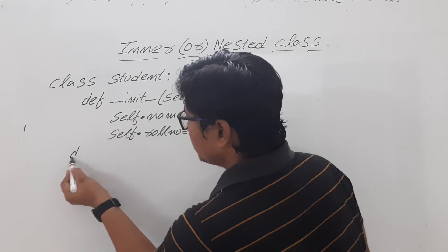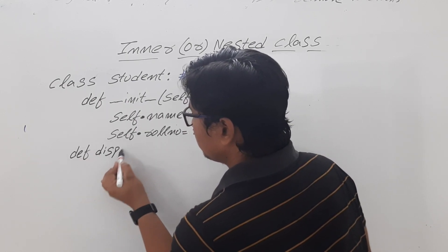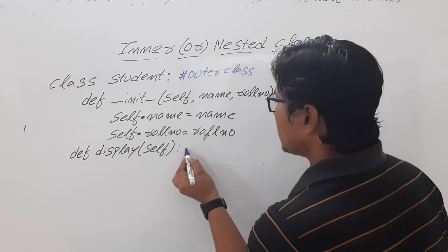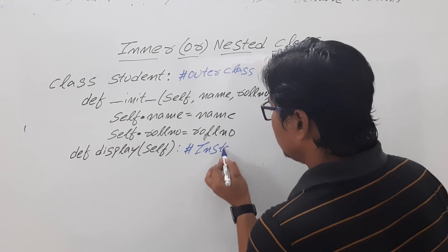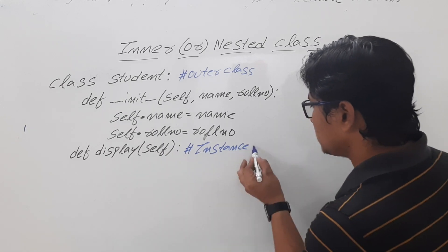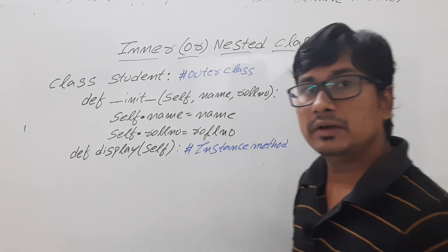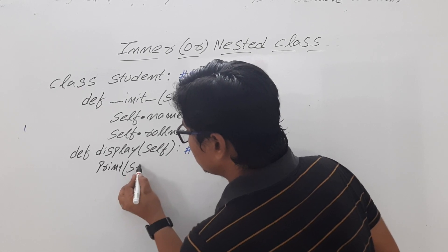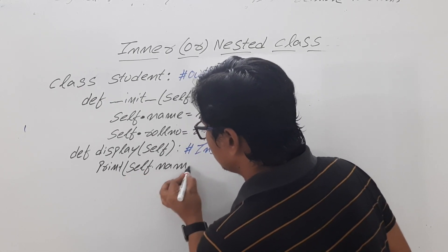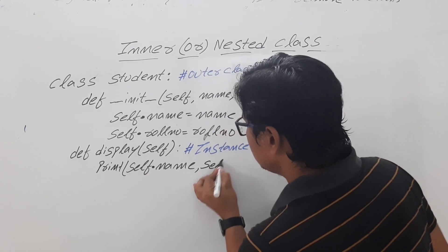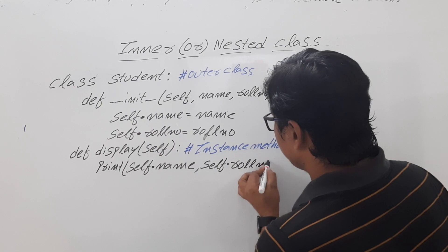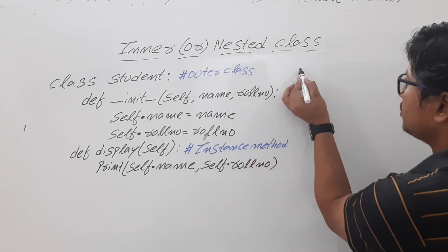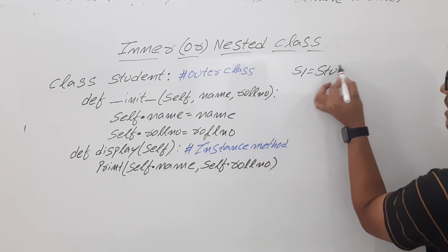To display these values we use a user-defined method called display and pass self — this is an instance method. We have three types of methods: instance methods, class methods, and static methods. Instance methods are useful for accessing instance variables. Inside display we write print self dot name comma self dot roll number. To create an object for this class, we write s1 equals Student.